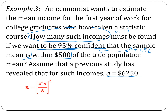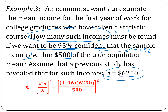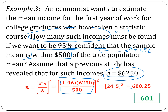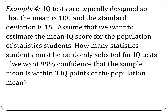We plug everything in: 1.96 times 62.50, divided by 500. We simplify this fraction and get 24.5. Square that and we get 600.25. This number should always be rounded up — it doesn't matter that it's closer to 600. Our answer for this problem is 601.